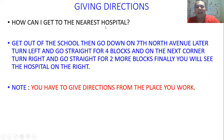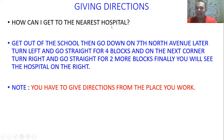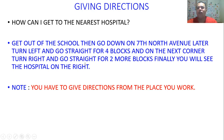The next scenario is about how to get to the nearest hospital. Excuse me, how can I get to the nearest hospital? Get out of the school, then go down on 7 North Avenue. Later, turn left and go straight for four blocks. And on the next corner, turn right and go straight for two more blocks. Finally, you will see the hospital on the right. This is how I can give you directions to get to different places from the place you work.